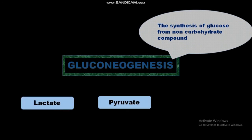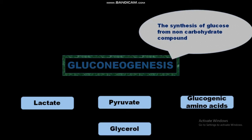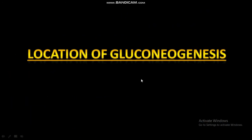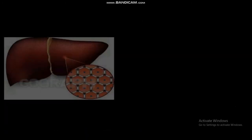pyruvate — which are the end product or byproduct of glycolysis — glucogenic amino acids, and glycerol. These are the major precursors of gluconeogenesis. Regarding the location of gluconeogenesis, it mostly occurs in the cells of the liver.